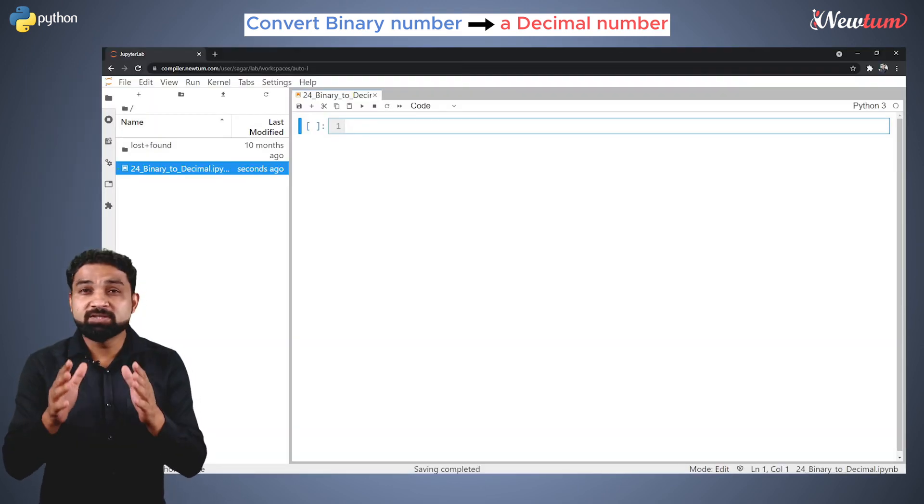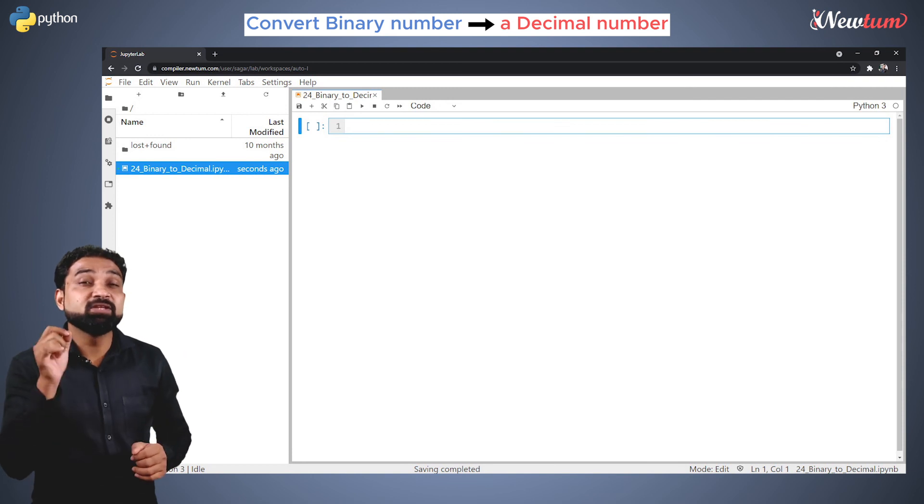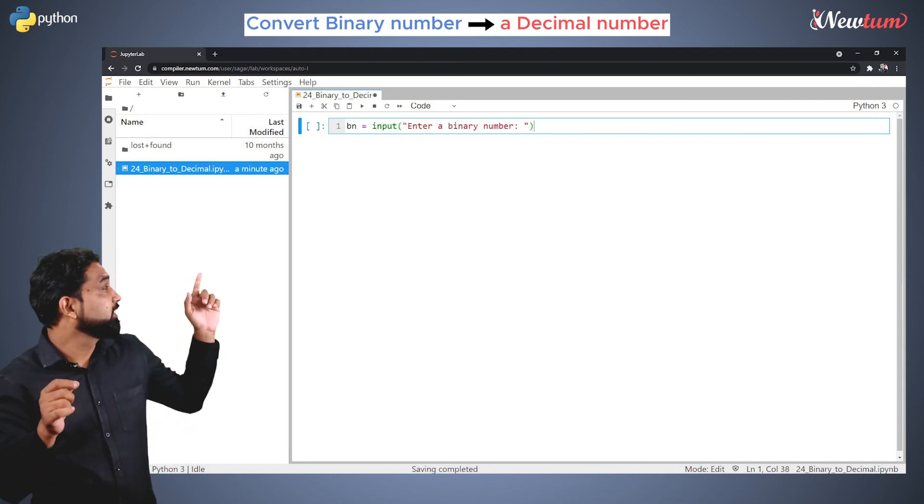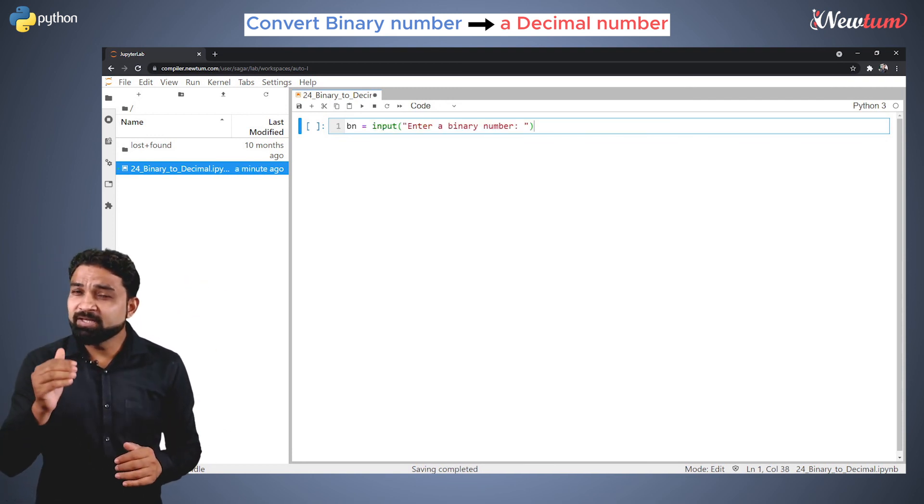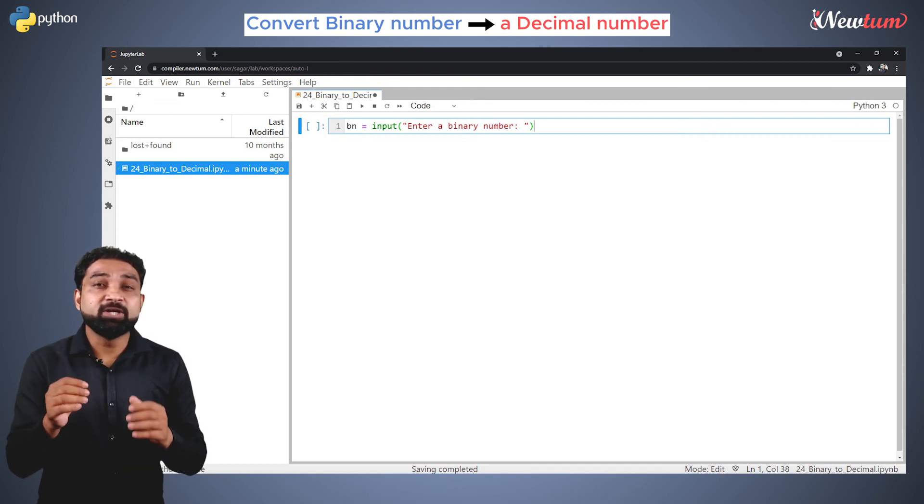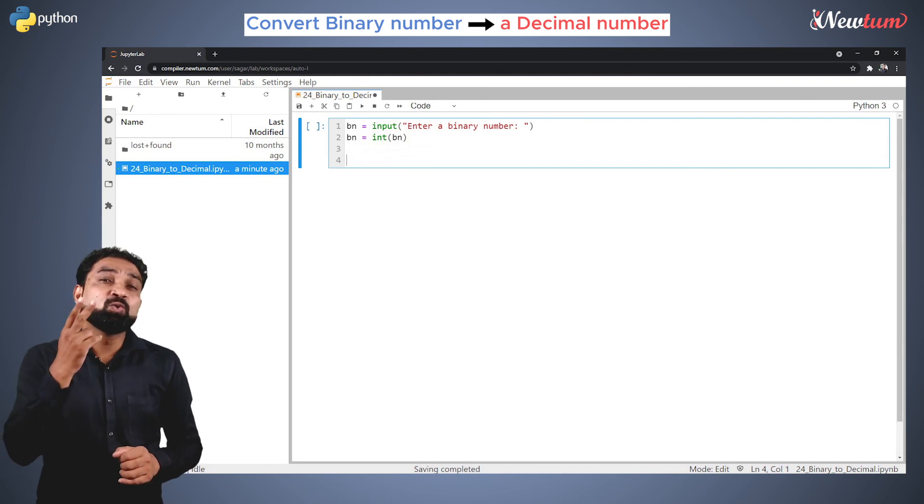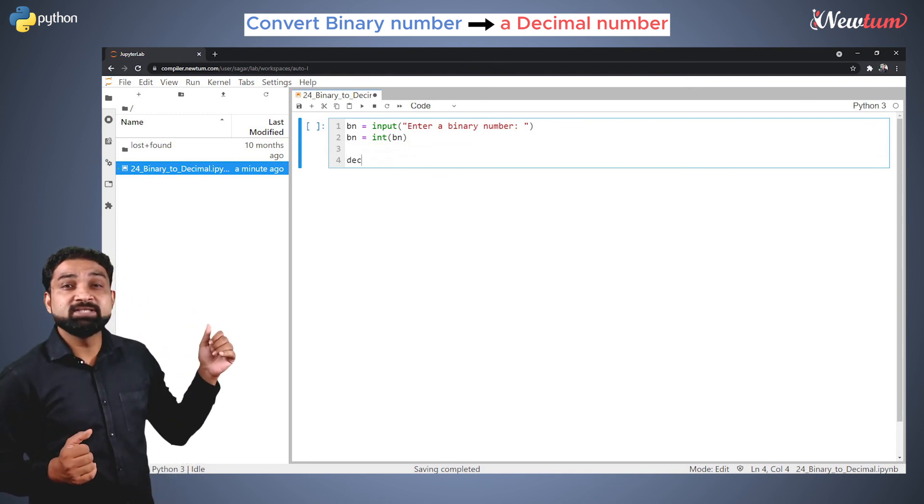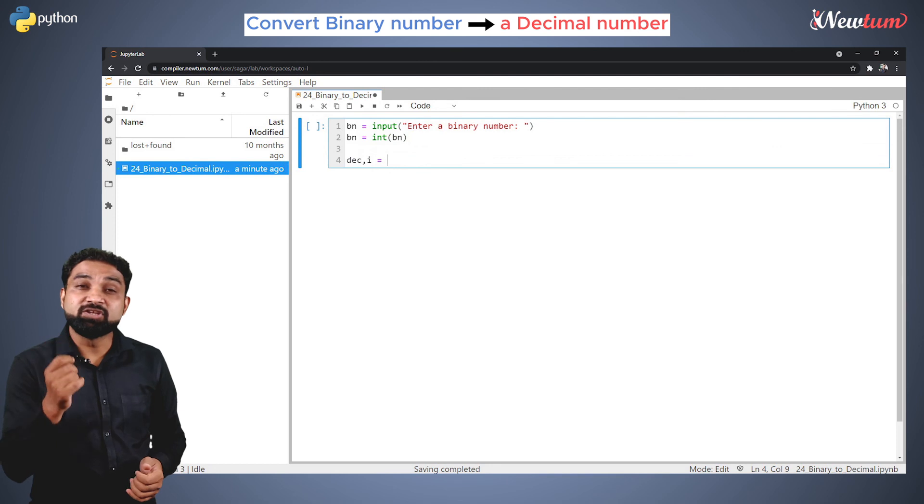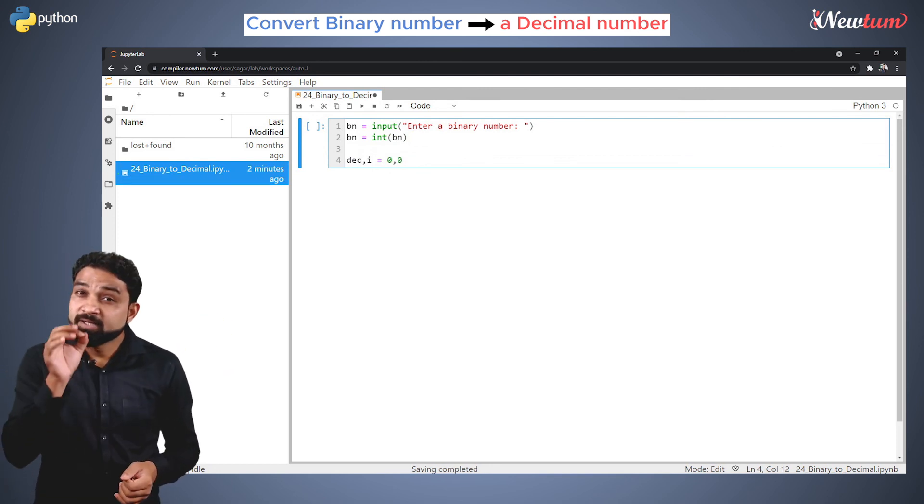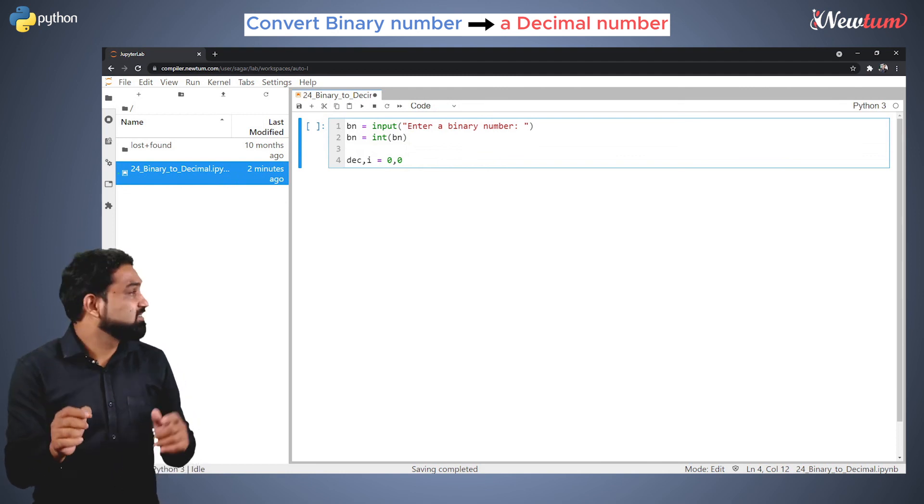Open your editor. First, accept the input in the variable bn using the input function. Then convert the bn into an integer using the int function. Declare two variables, dec and i, with the initial value as 0. Dec is for storing the final decimal number and i as the counter.